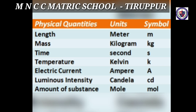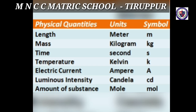What is a derived quantity? All other physical quantities which can be obtained by multiplying, dividing, or by mathematically combining the fundamental quantities are known as derived quantities.